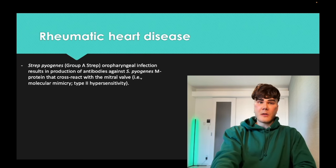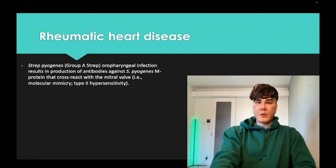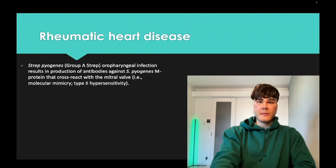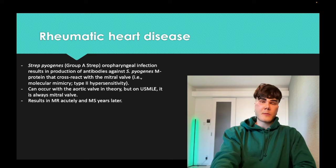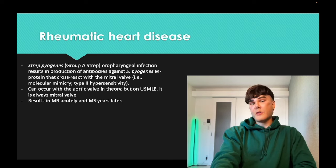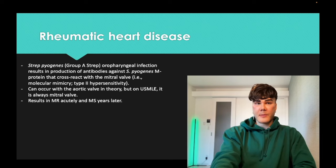Rheumatic heart disease: it's group A strep, strep pyogenes pharyngitis. The immune system makes antibodies against the group A strep M protein, and those antibodies cross-react with mitral valves — type 2 hypersensitivity, molecular mimicry. It can occur with the aortic valve in theory, but on USMLE it's always the mitral valve. Acutely it causes mitral regurg — a holosystolic murmur — whereas years later it causes mitral stenosis — a rumbling diastolic murmur with opening snap, decrescendo, mid-to-late diastolic.